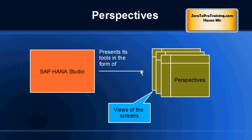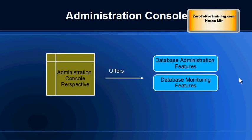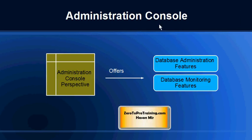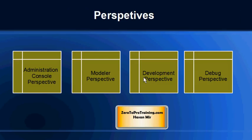SAP HANA Studio presents its tools in the form of perspectives. You can consider perspectives as different views of the screens. You can move from one perspective to the other and the screen layout and the windows will change accordingly. For example, the administration activities are performed through the administration console perspective. This perspective gives you features like database administration and database monitoring. Other perspectives include the modeler perspective, development perspective, and debug perspective.